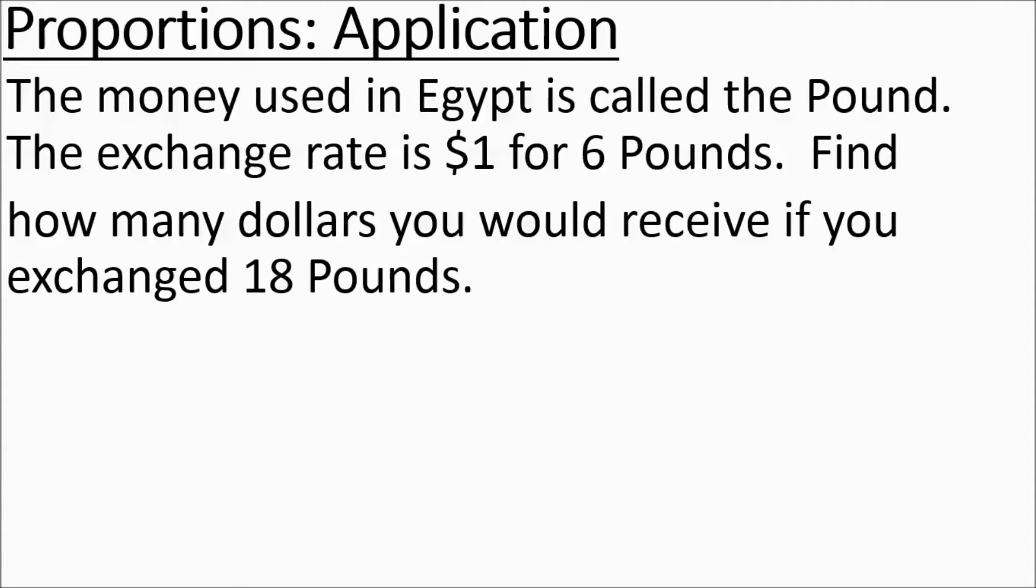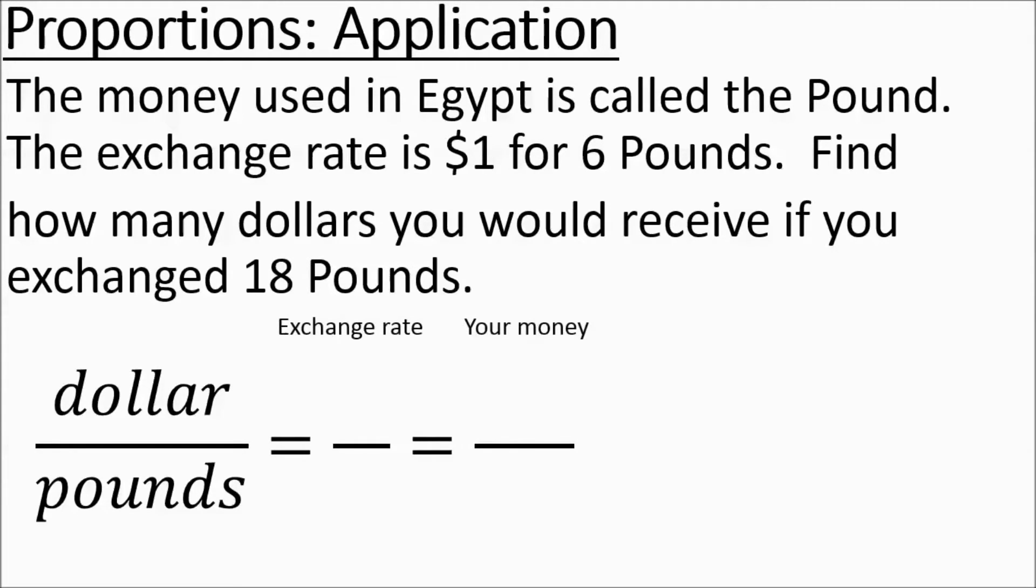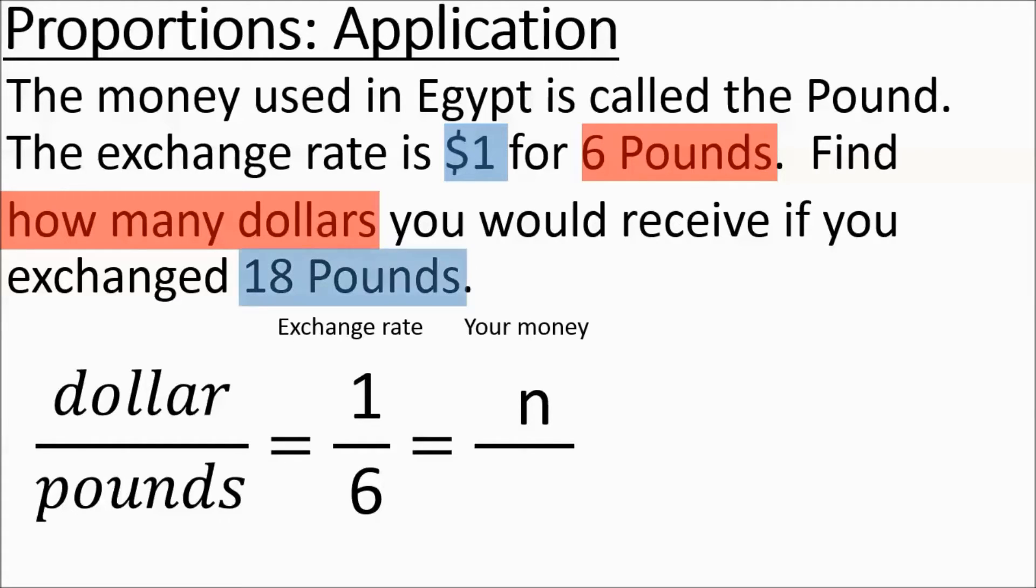So we're going to set some things up. We're going to set up dollars to pounds and then we're going to label our ratios. So the first one is the exchange rate and that's $1 for 6 pounds. And then we're trying to figure out what 18 pounds will be. They ask how many dollars would you receive so that means we don't know our dollar amount and then they say exchanged 18 pounds so that's going to go in the denominator.